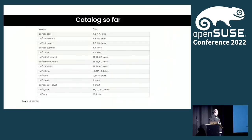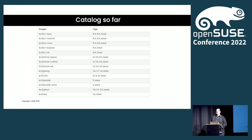Here is a quick overview of the catalog we have so far. We offer BCI containers since 15 SP3. We have 15.3 and 15.4 versions of the base container. For .NET we have versions 3.1, 5.0, and 6.0. For Golang we have 1.16, 1.17, and 1.18, with newer releases following. Node is available in versions 12, 14, and 16. OpenJDK in version 11. Python in 3.6, 3.9, and 3.10. Ruby in 2.5. In the pipeline we also have Rust, PHP, and Perl coming soon.